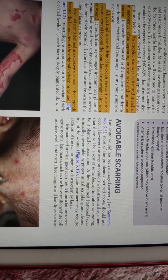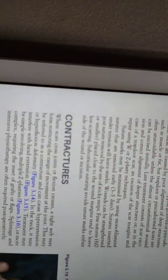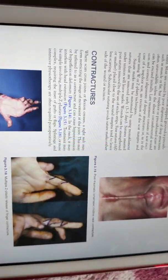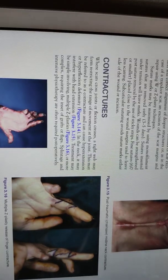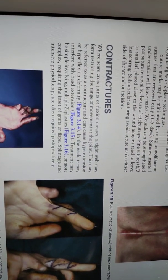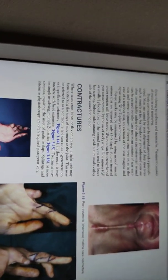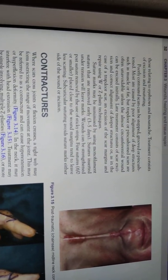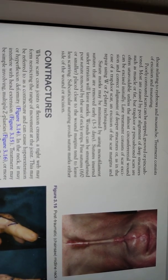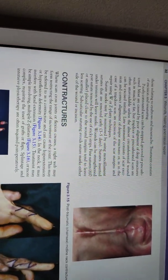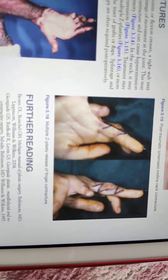To avoid scarring, incisions should be made according to Langer's lines so there is less tension. If a scar crosses joints, it might cause contractures, requiring various techniques like Z-plasty. For proper repair of scars, different techniques like W-plasty and Z-plasty may be used.